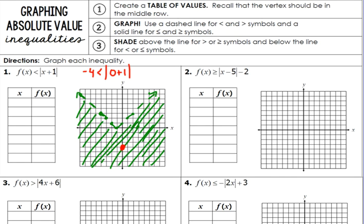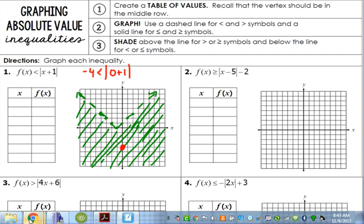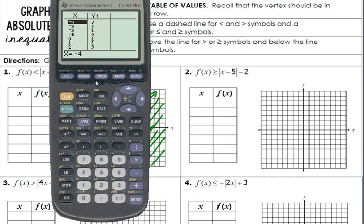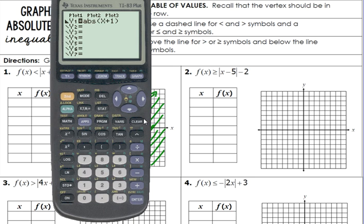Let's do another one. Let's do number 2. The key with number 2 is that you've got to remember to close your parentheses. These aren't hard. You've just got to know how to use your calculator and remember to close your parentheses. So math, num, abs, x minus 5, close your parentheses. Where that absolute value bar closes, your parentheses close. Minus 2.